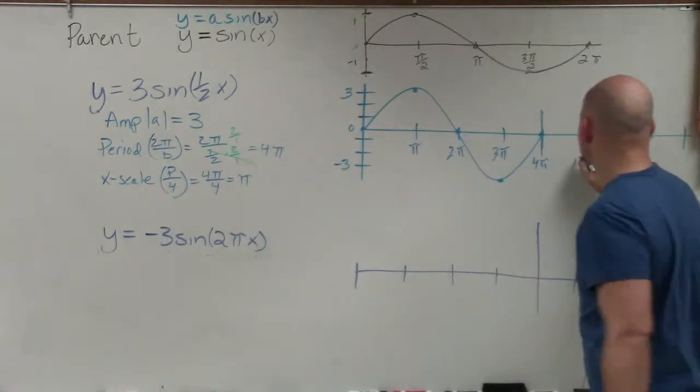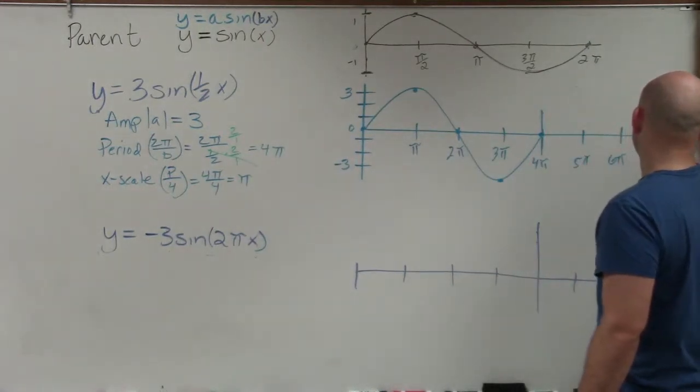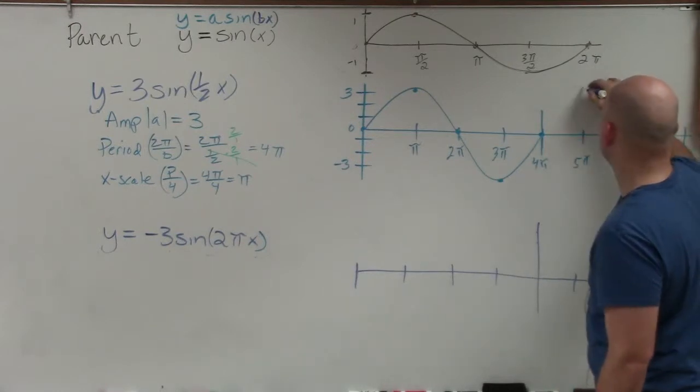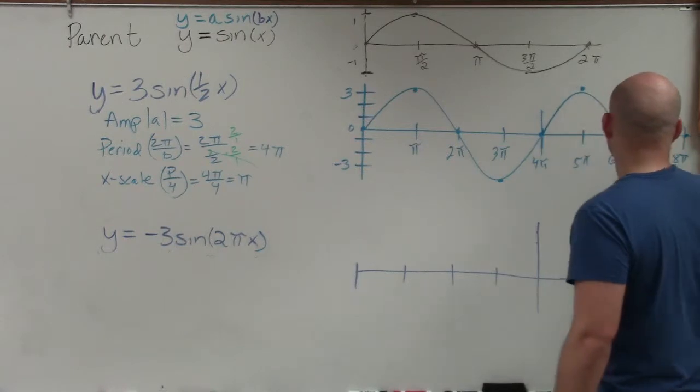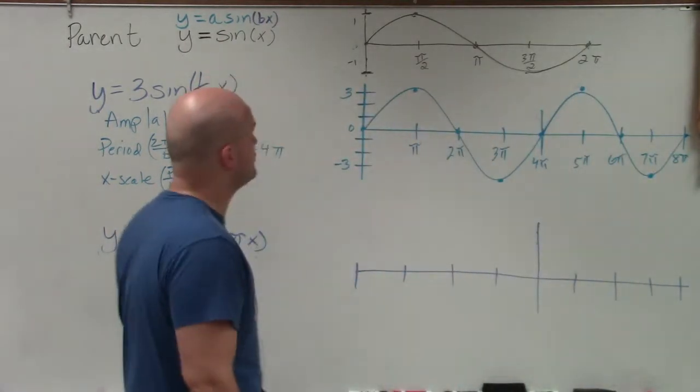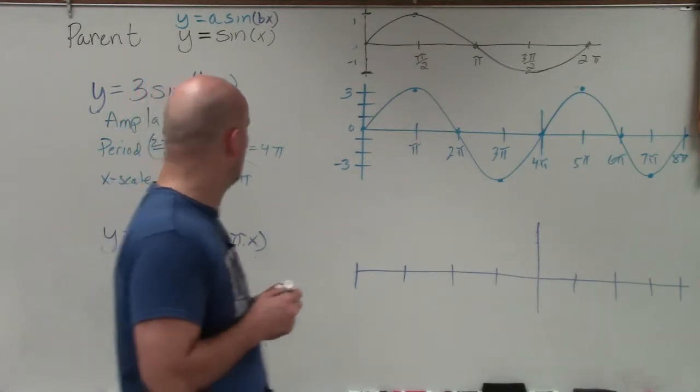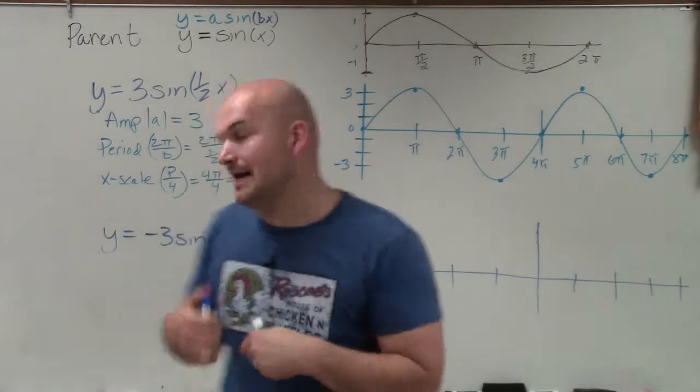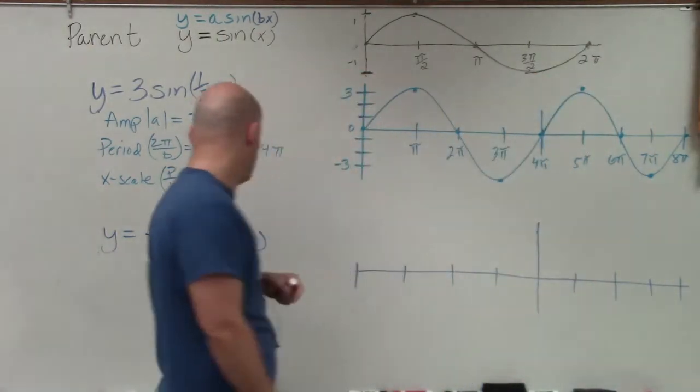OK? Then, let's just continue our x scale. 5 pi, 6 pi, 7 pi, 8 pi. Goes up, down, middle, up. So there you go, ladies and gentlemen. That is how you graph. That is how you graph when you have a phase shift and or a period of 4 pi. And actually, what they did is that elongated, right? So you can see the period is actually much longer than it was up there for the parent graph.